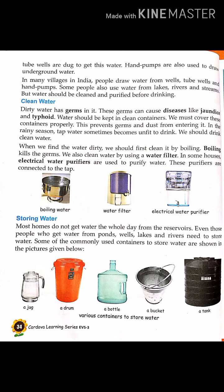We have to keep water in a clean container and cover it nicely to prevent germs. When we find the water dirty, we should first clean it by boiling — boiling kills the germs. We should also use a water filter. Nowadays electric water purifiers are available; these are connected directly to the tap, and when you use the purifier, it cleans the water so it is safe to drink.